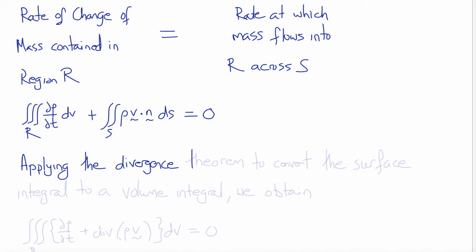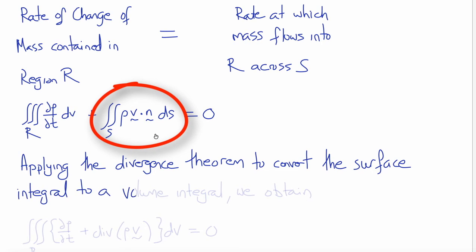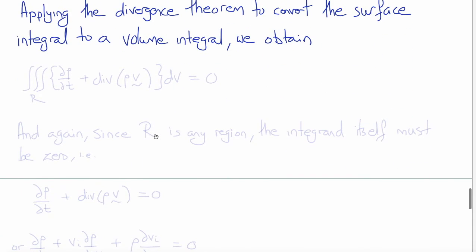So now applying the divergence theorem to convert this surface integral into a volume integral, we obtain that the triple integral over R of d rho dt plus the divergence of rho V with respect to volume is equal to 0.